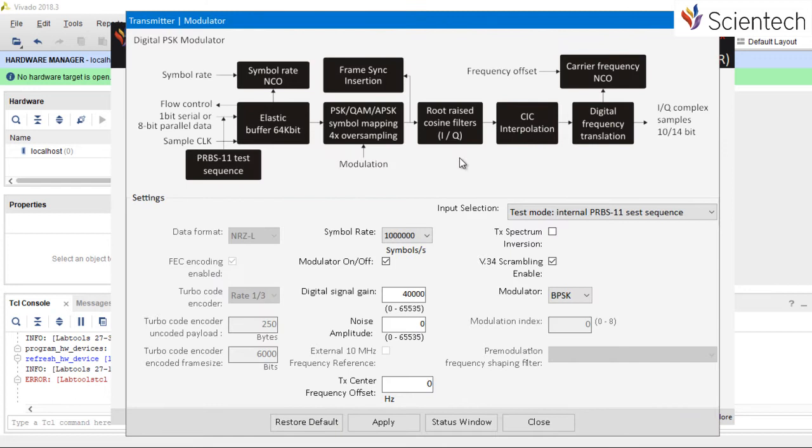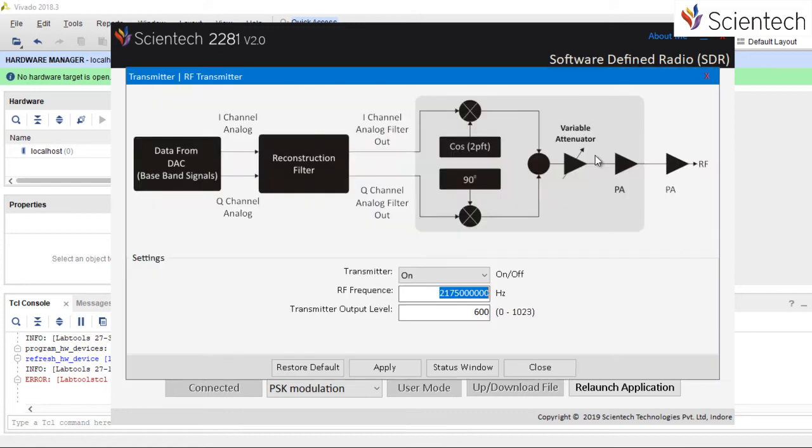This is the block diagram of PSK modulator. Here users can set various parameters like symbol rate, digital gain, modulation, spectrum inversion, scrambling, etc. Users can set RF up converter frequency and gain.